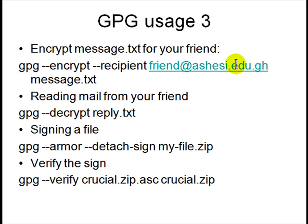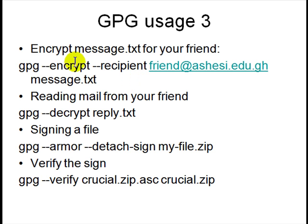You give GPG a recipient's name, and you must have the public key of that person. Then you specify the text file or file you want to encrypt. GPG will encrypt that text file into a .gpg encrypted file using the public key of that person, and only that person can open it. Optionally you can also say to encrypt using your own key too, so that you can also open it. Then your friend emails the encrypted file, and when they reply, you decrypt using 'gpg --decrypt' followed by the reply file.